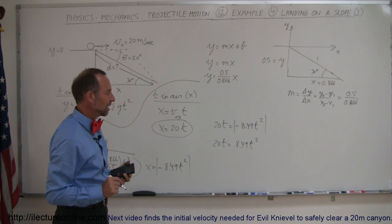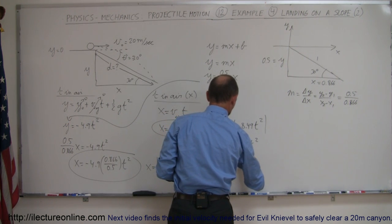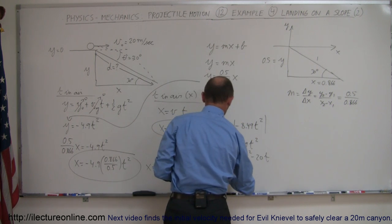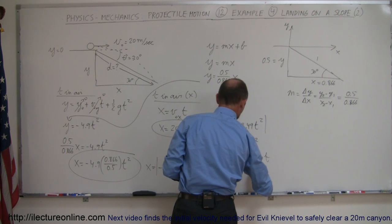Now I can go ahead and solve that for t by moving one to the other side, so 0 is equal to 8.49t squared minus 20t. Factor out a t, so 0 is equal to t times 8.49t minus 20, which means t is equal to 0, or when I solve, set that equal to 0.